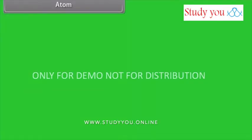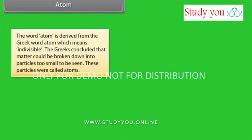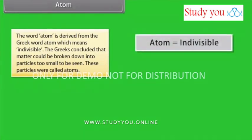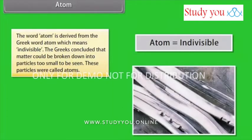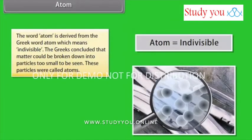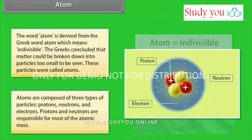The word atom is derived from the Greek word atom, which means indivisible. The Greeks concluded that matter could be broken down into particles too small to be seen. These particles were called atoms. Atoms are composed of three types of particles: protons, neutrons and electrons.